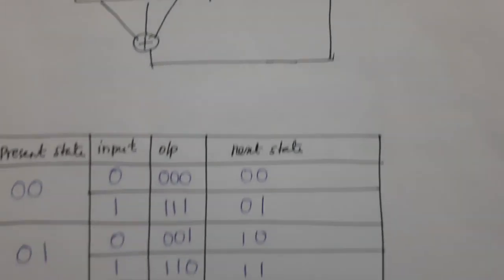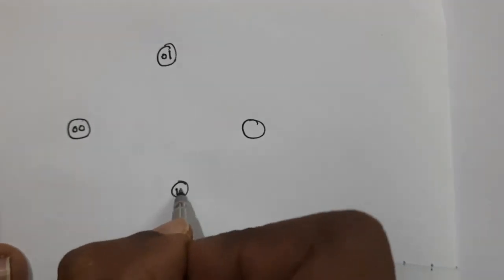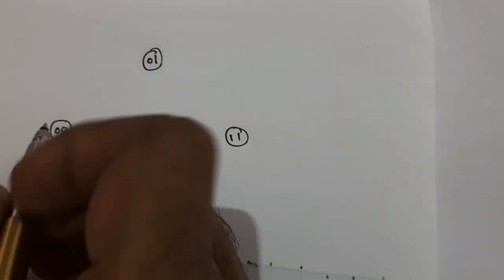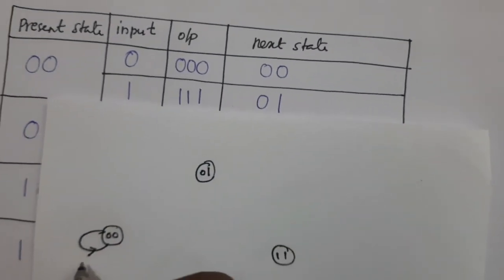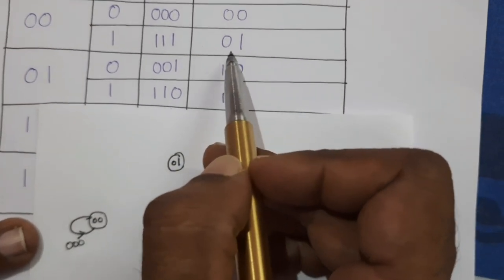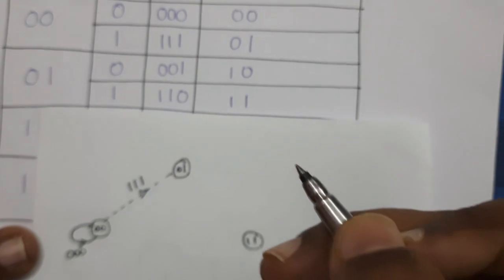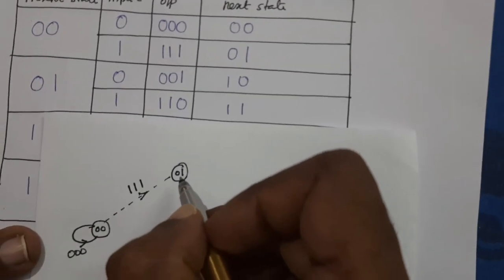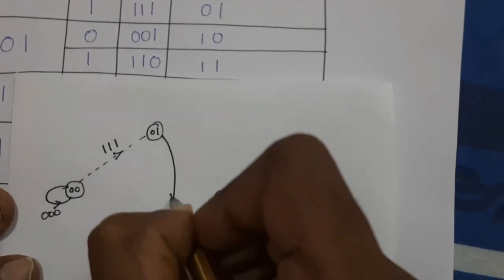Based on the state transition table, we draw the state diagram by placing all states: 00, 01, 10, 11. If present state is 00, the next state is 00 itself with output 0, 0, 0. If input is 1, next state is B (01) with output 1, 1, 1, represented by a dotted line. For present state 01 with input 0, output is 0, 0, 1 and next state is 10 (C).